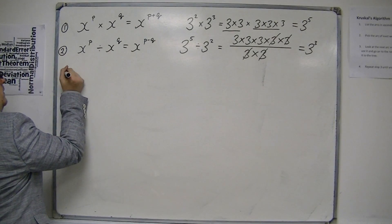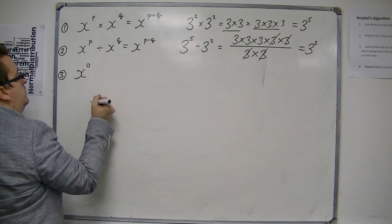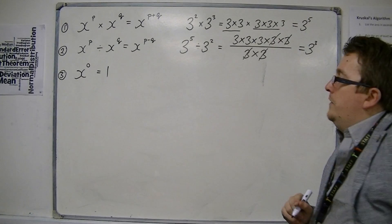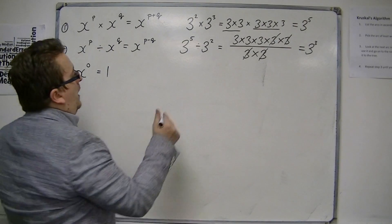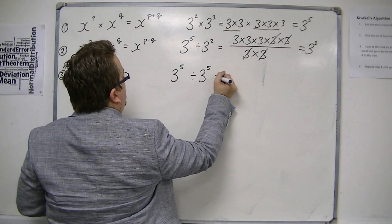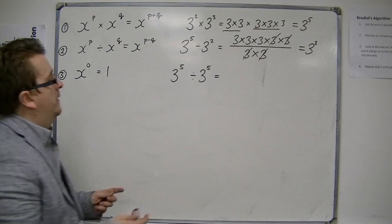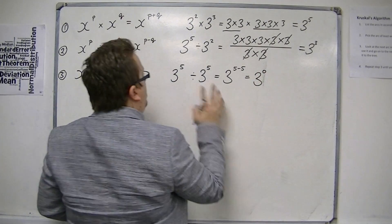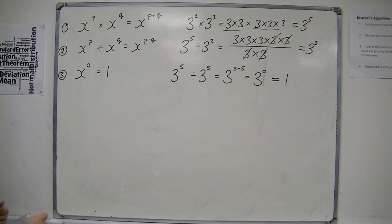The next rule says that if you've got anything to the power of 0, then this is just 1. This is a little bit more interesting in terms of where it comes from. If you took 3 to the power of 5 divided by 3 to the power of 5, we know any number divided by itself is 1 — except for 0, we don't know what that is. Using our rule, that must mean we've got 3 to the 5 minus 5, which is 3 to the 0. Since one number divided by itself is 1, this must be 1. And I could repeat that for any number, so x to the 0 is 1.